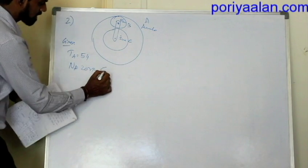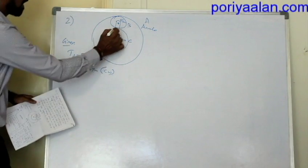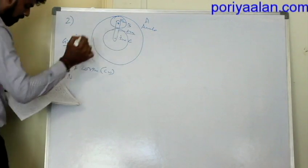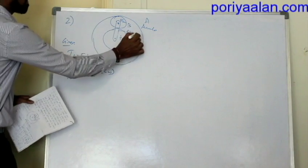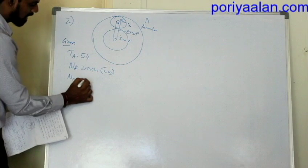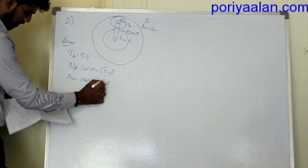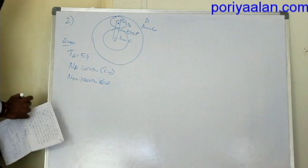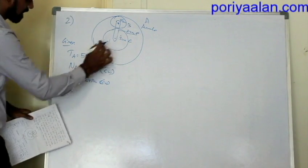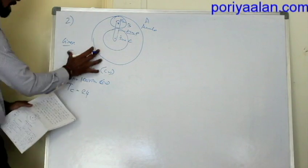The annular gear rotates in the clockwise direction. Arm P: NP = 100 rpm counterclockwise. Sun gear C: TC = 24 teeth. This is the complete given data for the problem.